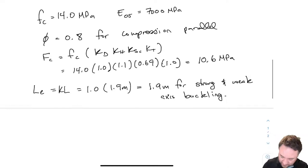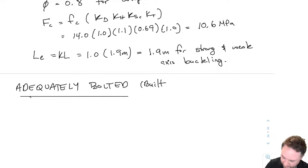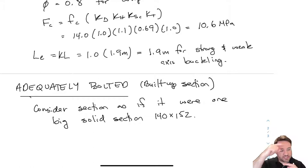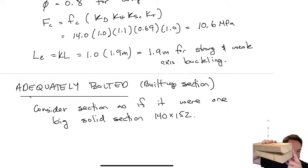This situation is considerably simpler than the previous glulam example where we had different effective lengths for each direction. First, let's do the case where we have adequate bolting — a built-up section. We're assuming the spacing between bolts is adequate, we have the correct number of rows, and we're using at least quarter-inch bolts. Given all that is true, we can consider the built-up section as if it's one solid section of the full outer size.